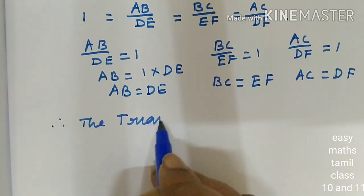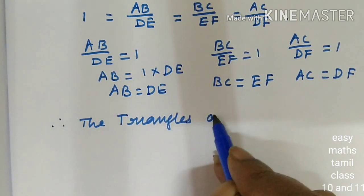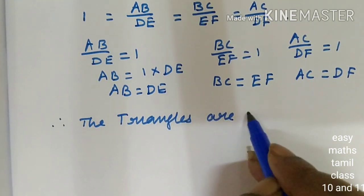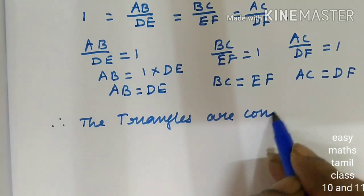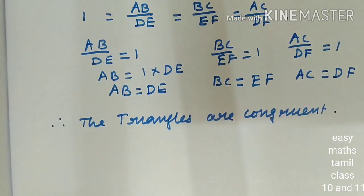Since all three corresponding sides are equal, the triangles are congruent. Therefore, the triangles are congruent.